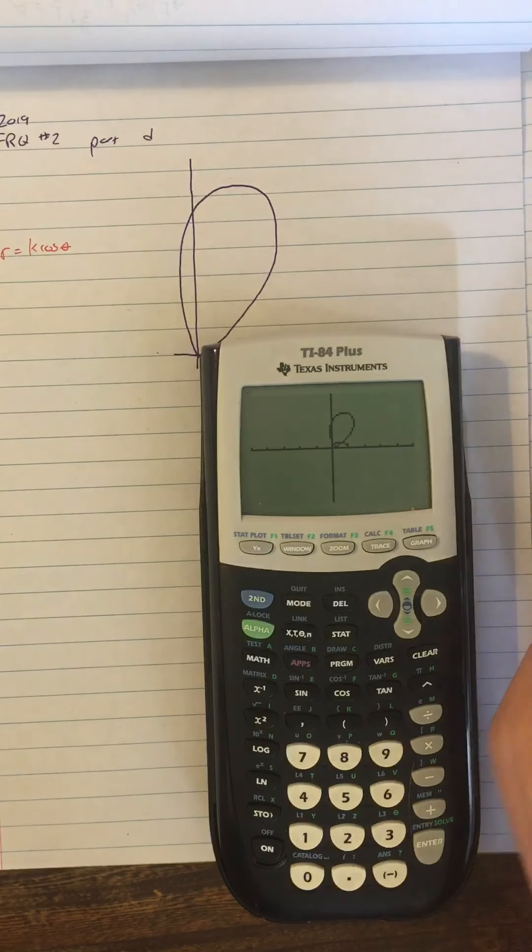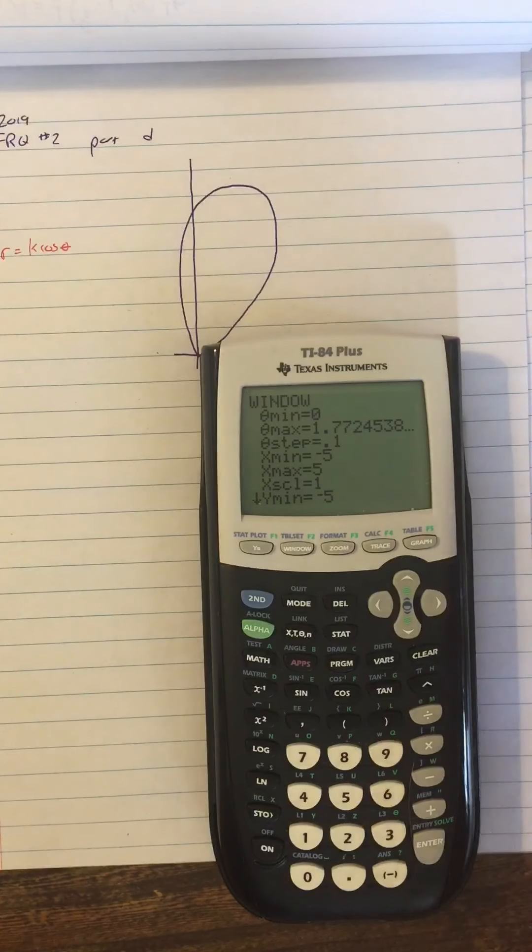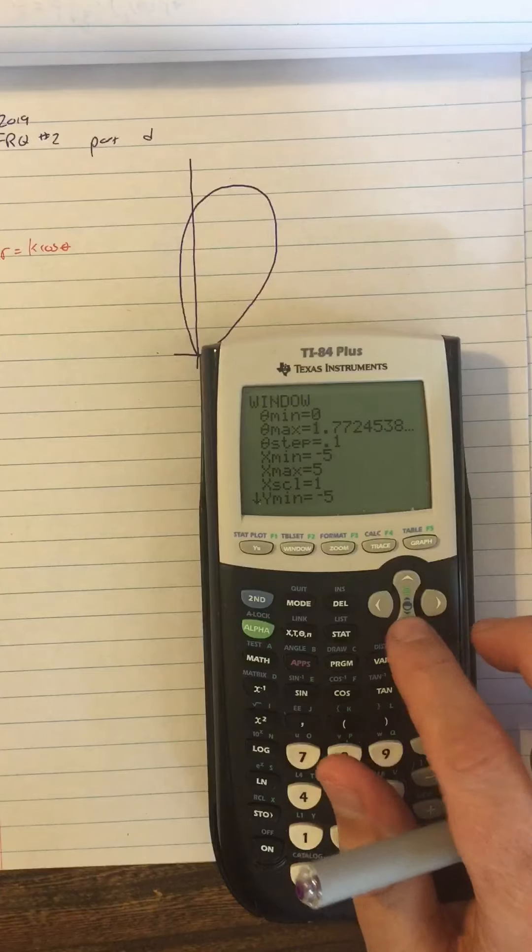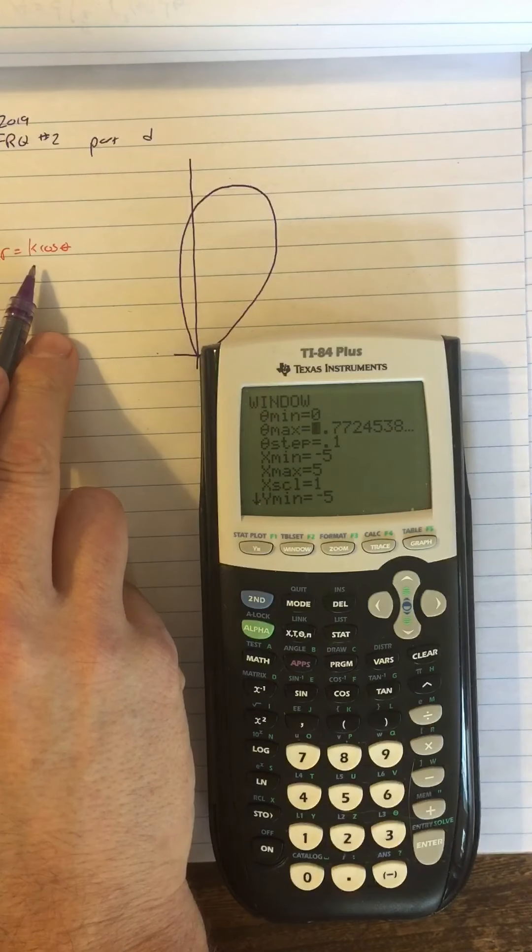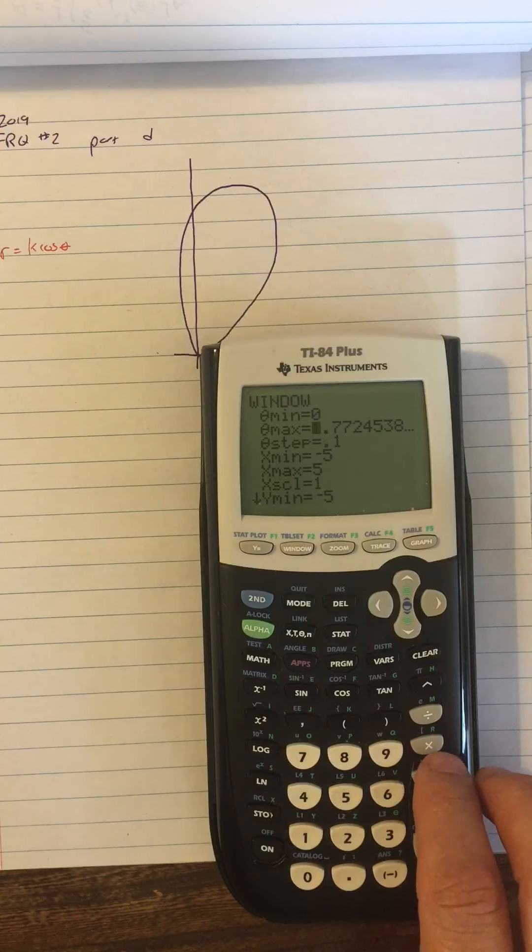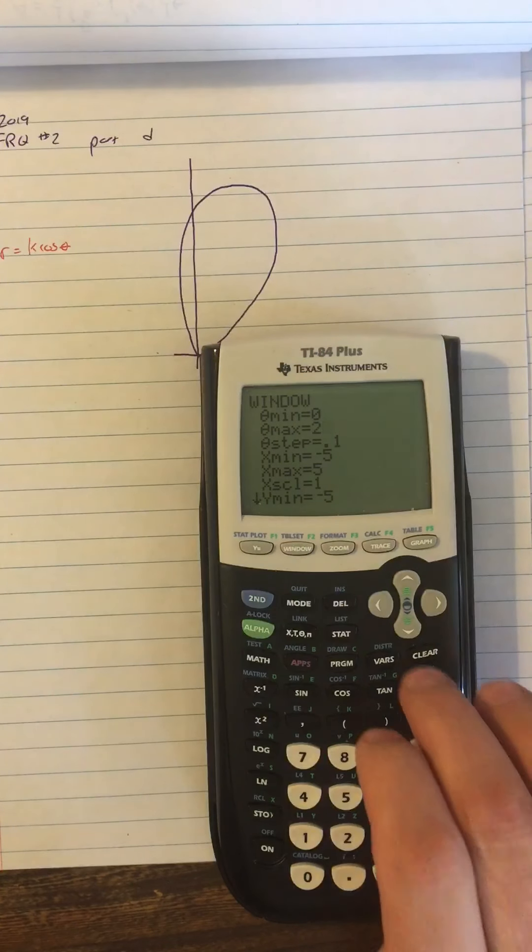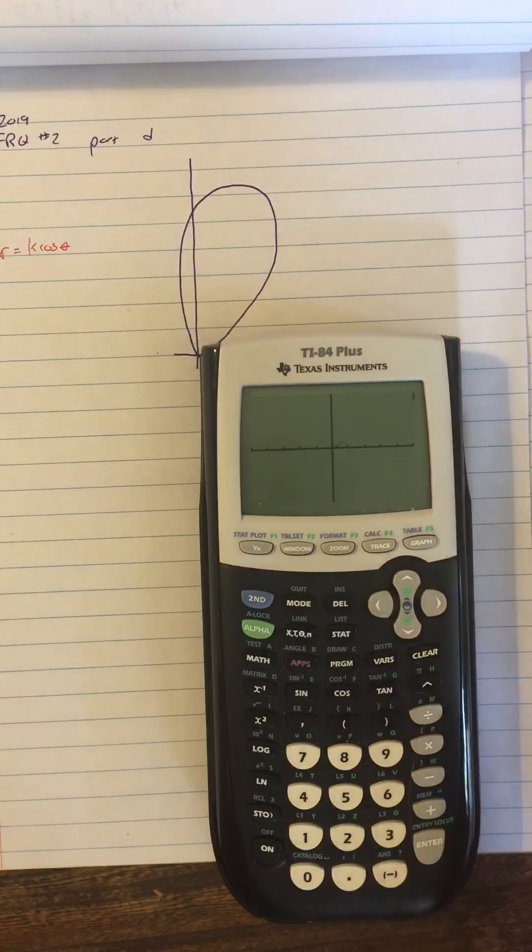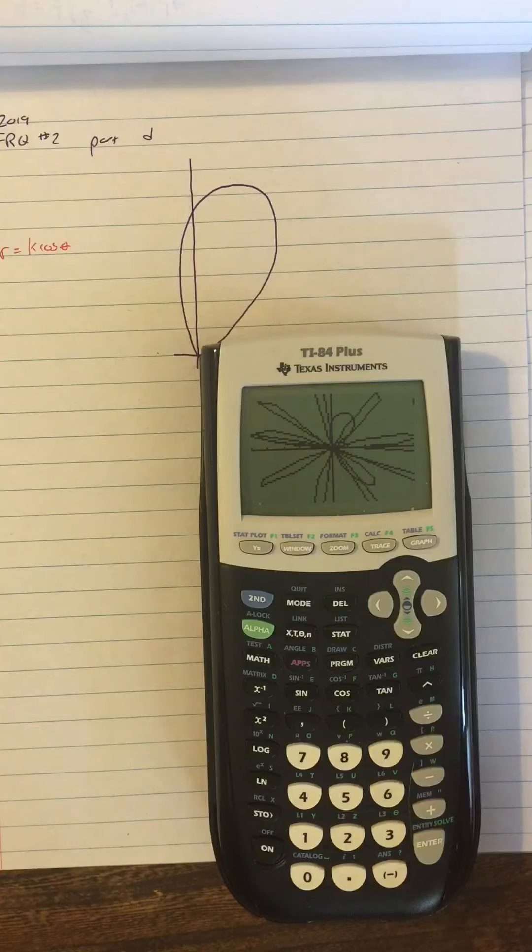I suspect that I'm not seeing the whole graph because in my window, I'm only letting the theta max go up to square root pi. And a lot of times these equations like k cosine theta, they're going to require the theta max to be two pi. It might be just pi, but two pi will be good safety. So then I go to graph that and the problem I encounter is that I get this craziness. So like, what's that about?